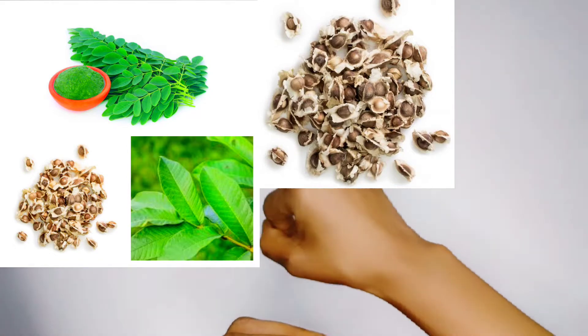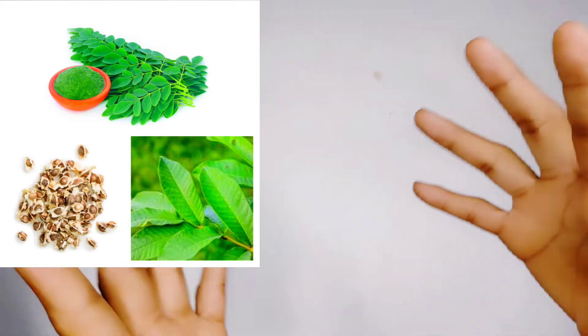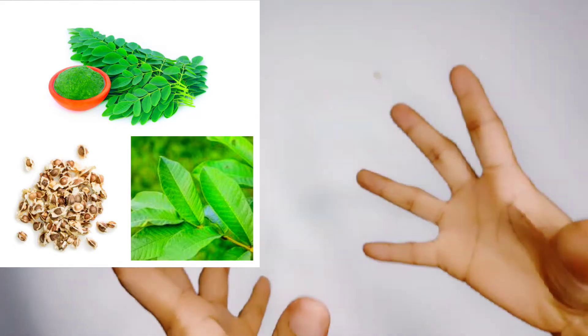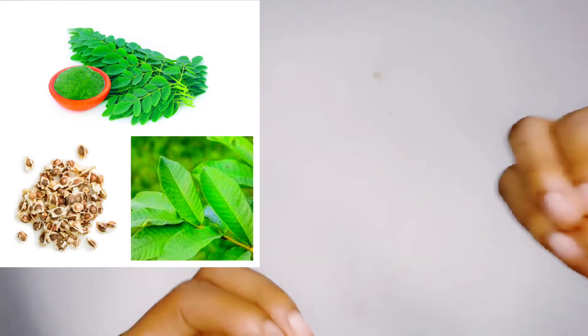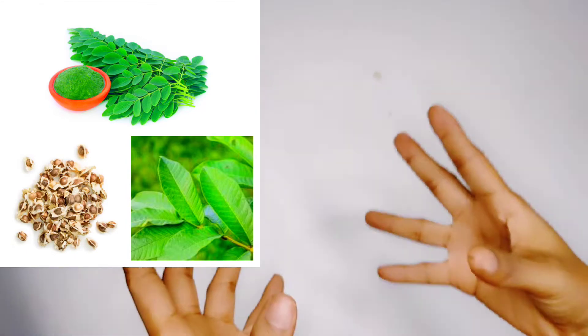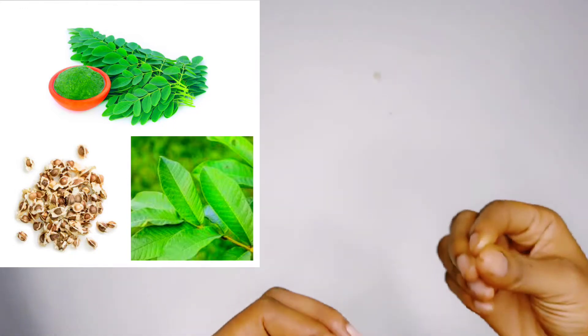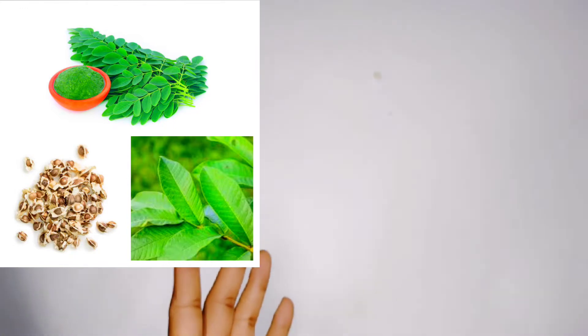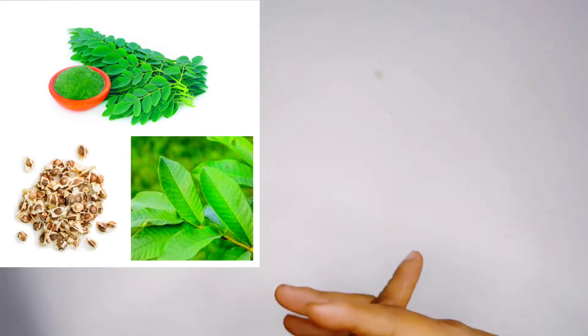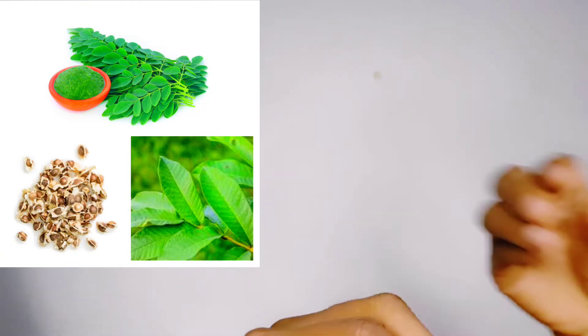You will get these three items. When you get these items, you go ahead and wash these leaves very well with clean water. After washing this leaf very well, you go ahead and add water inside of it and put it on the fire to boil at least 30 to 40 minutes.